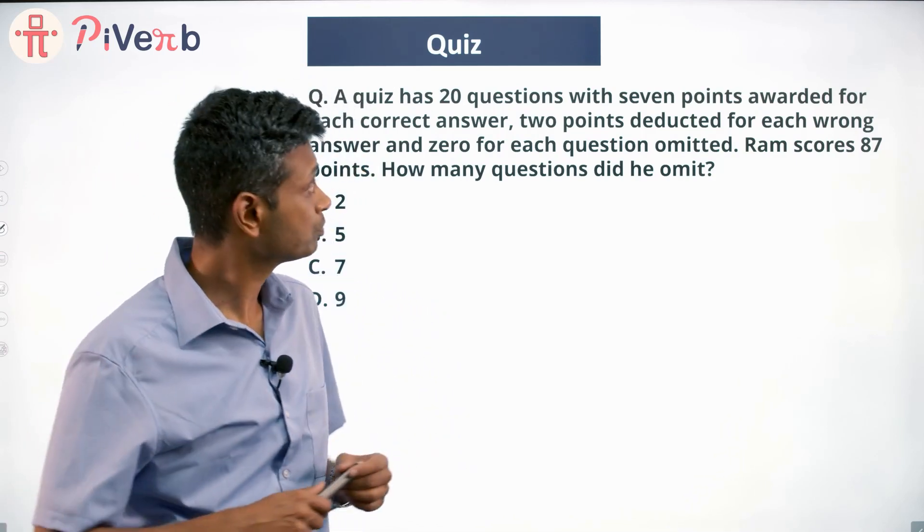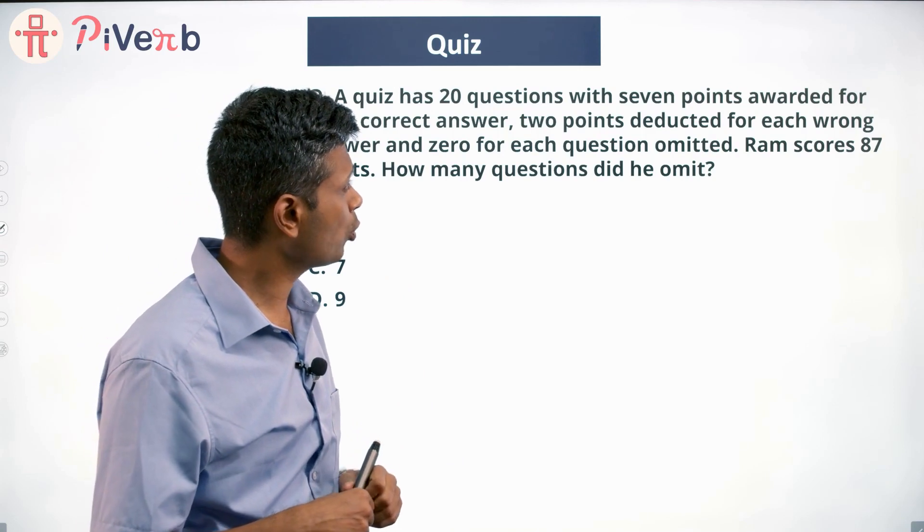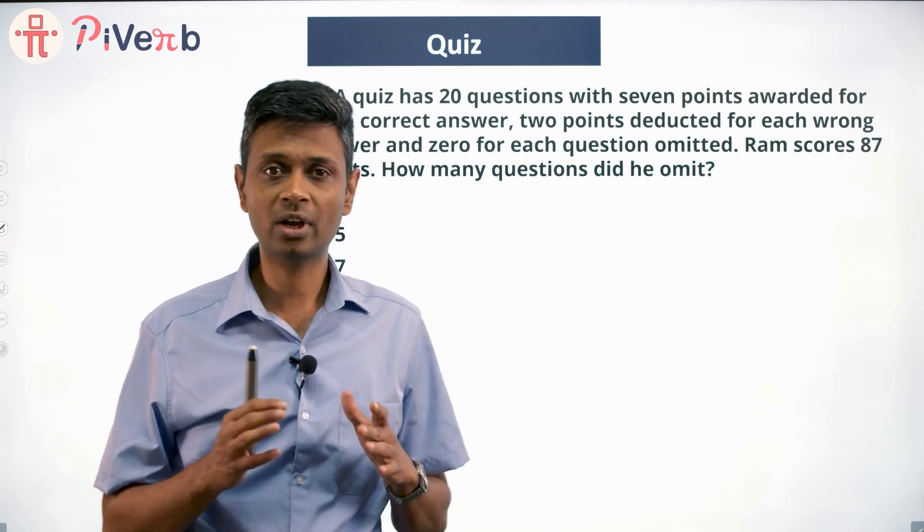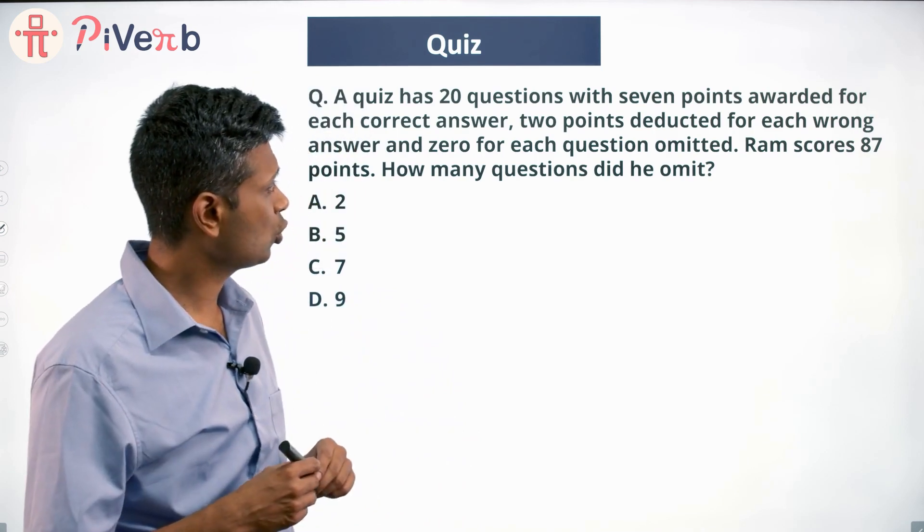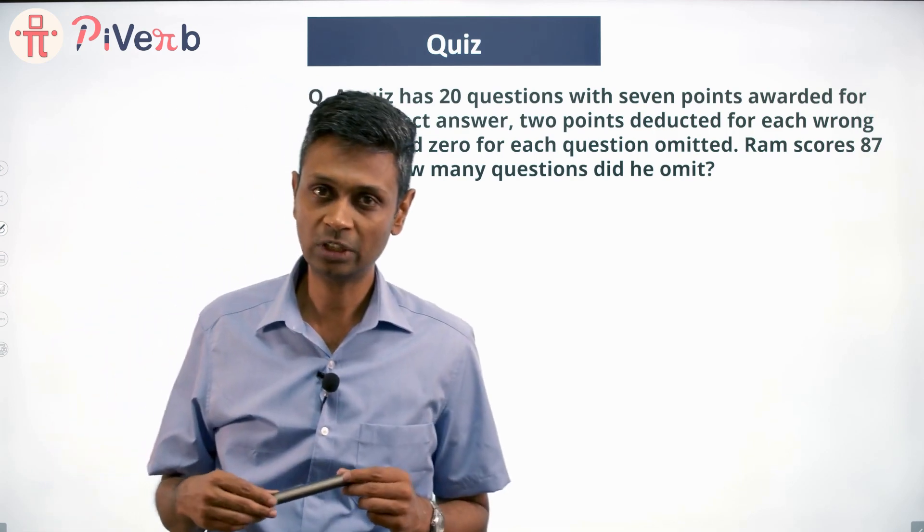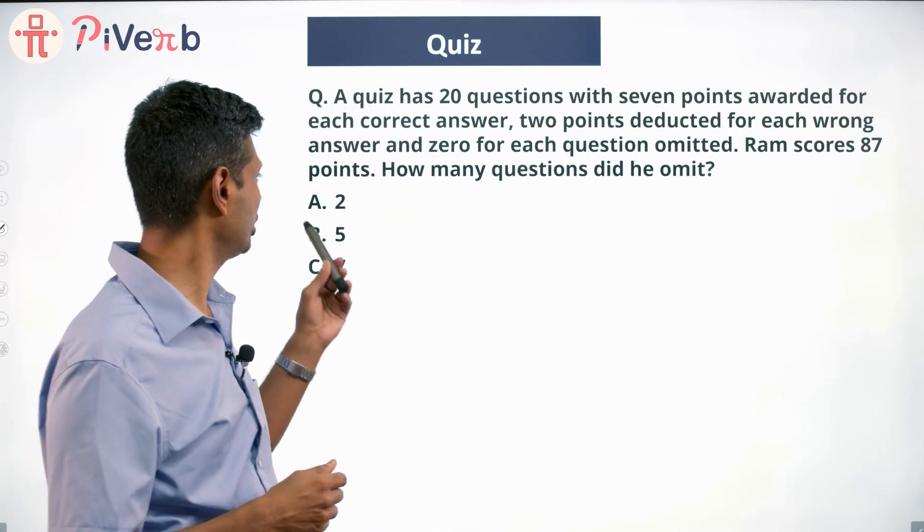A quiz has 20 questions with seven points awarded for each correct answer, two points deducted for each wrong answer, and zero for each question omitted. Ram scores 87 points. How many questions did he omit? I'm going to do this by trial and error. I'm going to assume that he omitted two questions.